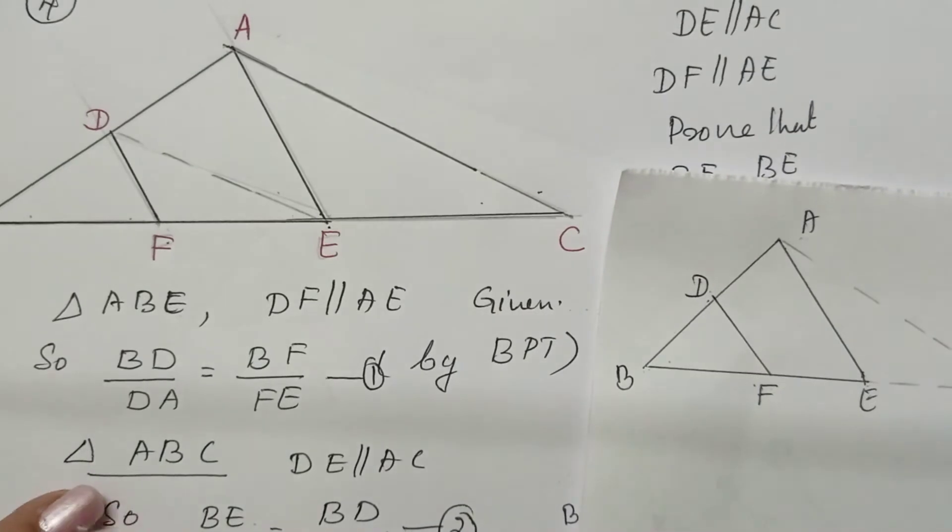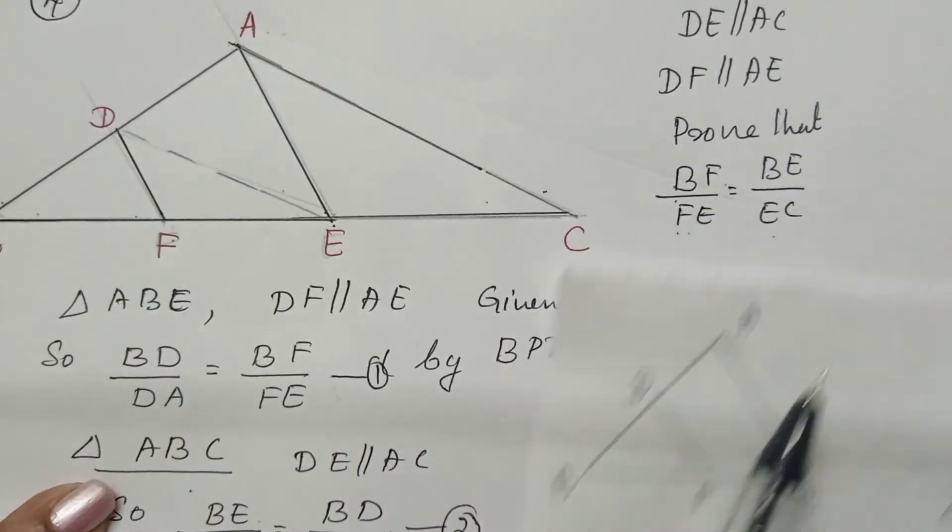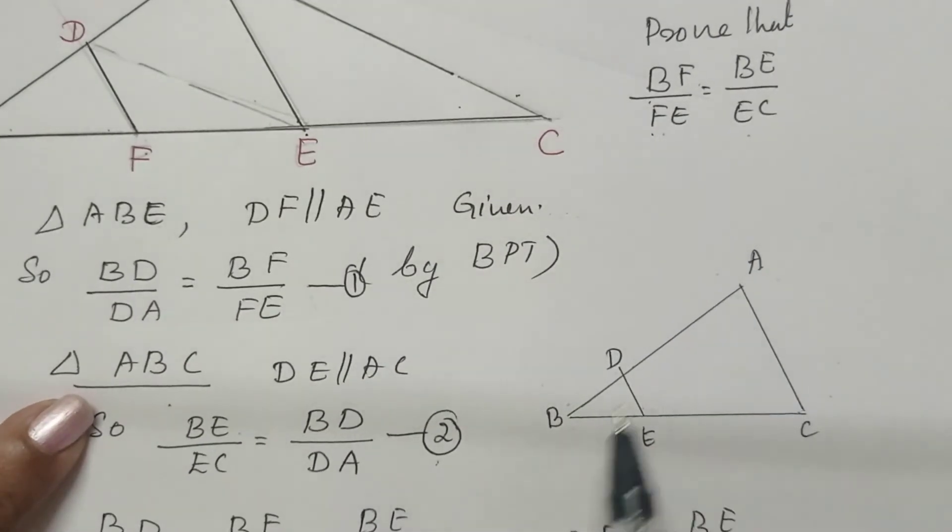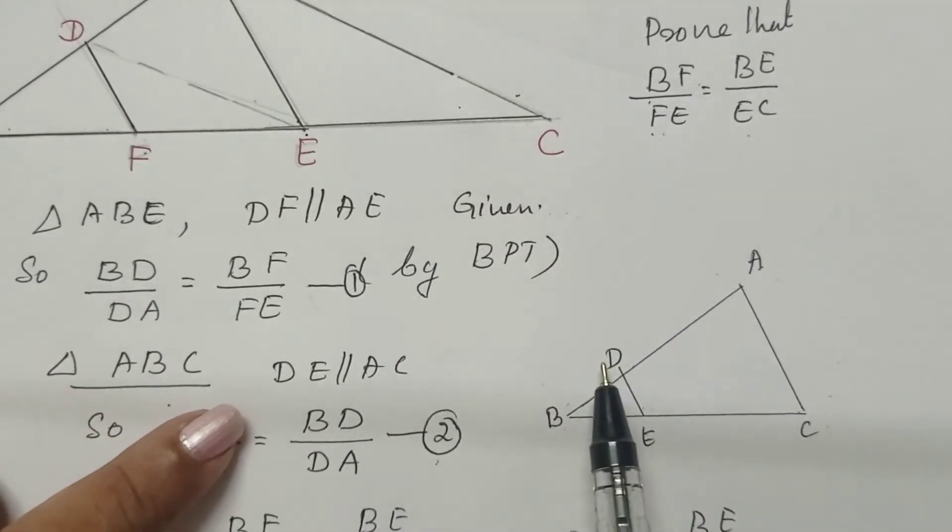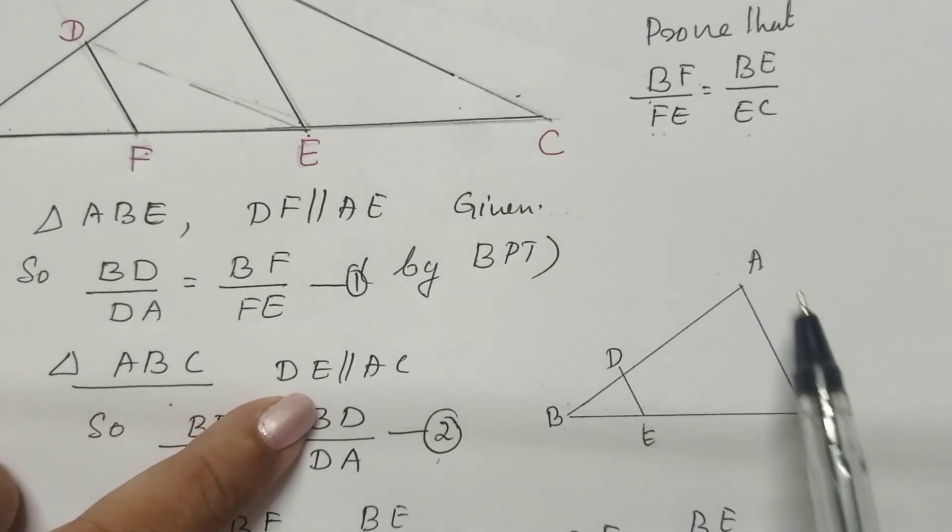Take the big triangle ABC. DE is parallel to AE, given in the question.